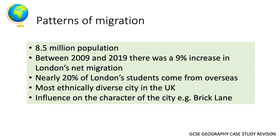We also need to know about patterns of migration — why people are moving to London. London's population is around 8.5 million. Between 2009 and 2019 there was a 9% increase in net migration, so the population is increasing over time. Nearly 20% of London's university students came from overseas, encouraged by a number of top-class universities in the city, contributing to a relatively young population.